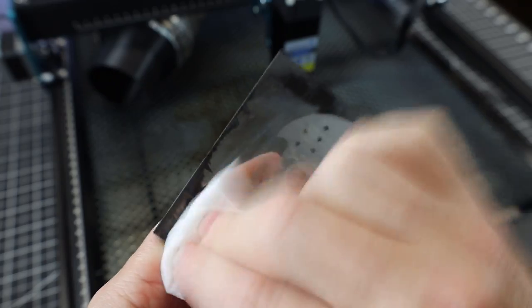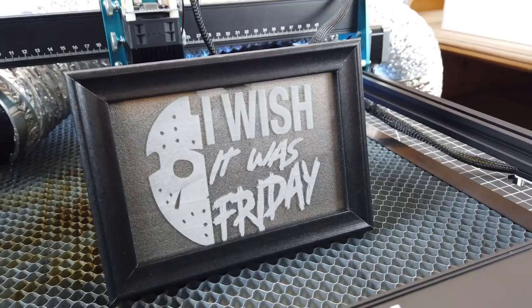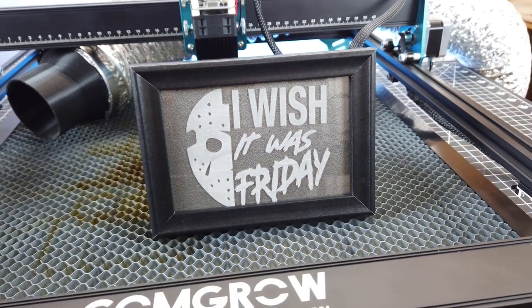And if you did use a spray paint, you're going to want to get some acetone as well to remove it. And with it all cleaned up and back in the frame, it looks really nice. And with the darker backing on this, you can see everything really clearly.